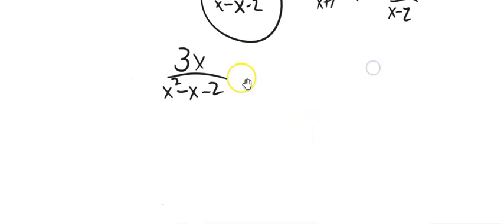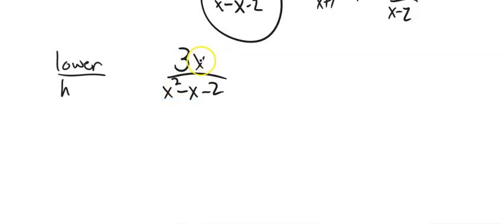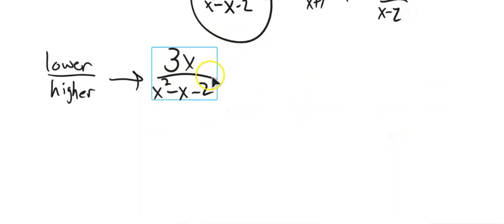One thing to notice is we're going to have to pay attention to the degree of the denominator and of the numerator. The degree here is 2, the degree here is 1. As long as we are lower degree over higher degree, we're good to do the method I'm going to show you. If not, we'll have some techniques in order to get there.